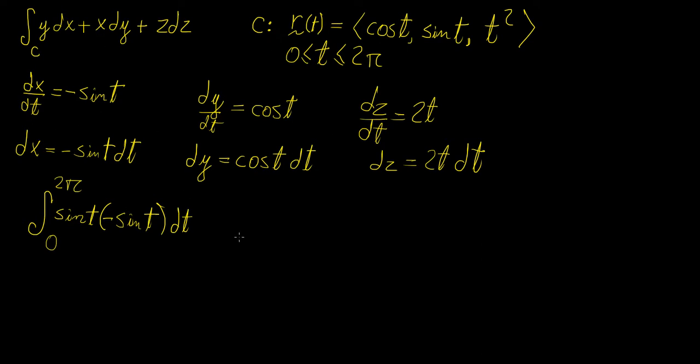So that's this whole element, dx. Now the next one is going to be plus cosine of t, and we're going to multiply by the element dy, which is this whole thing, cosine t dt. And then the last one is going to be this element, z, t squared, times the element dz, so that's 2t times dt.